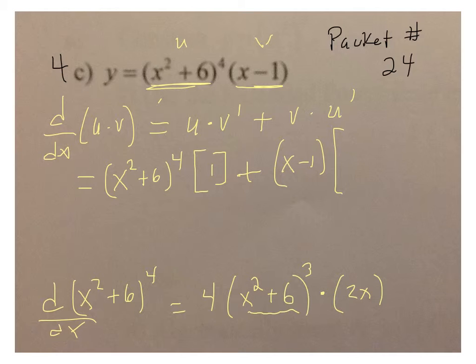So that all makes up u prime. I'm going to multiply this 4 and the 2 together, and it's common to have the x in front of what would be in the parentheses. Now, there are going to be some problems, that answer's fine.